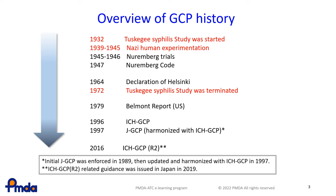And in 1996, introducing this spirit, ICH GCP, which is now recognized as an international fundamental in conducting clinical trials, was published. ICH GCP was revised to Revision II in 2016. In Japan, J-GCP was enforced in 1989, then updated and harmonized with ICH GCP in 1997.